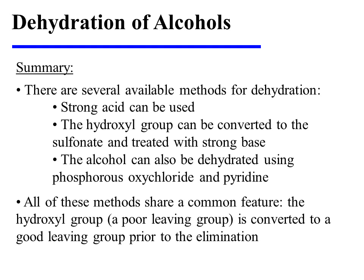In summary, there are several available methods for the dehydration of an alcohol. Strong acid can be used. Alternatively, the hydroxyl group can be converted to a sulfonate and then treated with strong base. And yet another option is to dehydrate the alcohol using phosphorus oxychloride and pyridine. All of these methods share a common feature: the hydroxyl group, which is a poor leaving group, is converted into a good leaving group prior to the elimination.